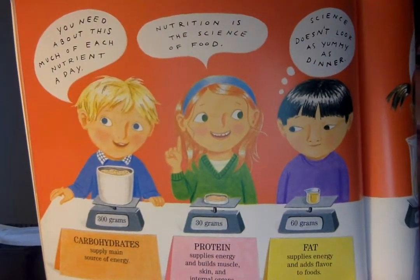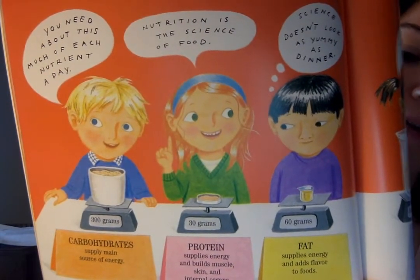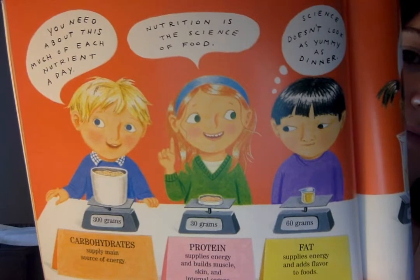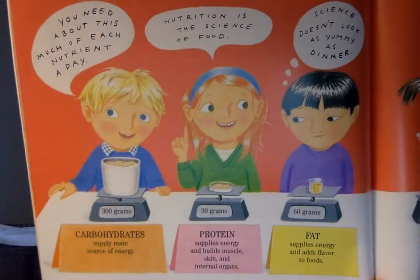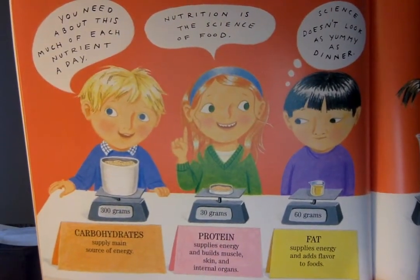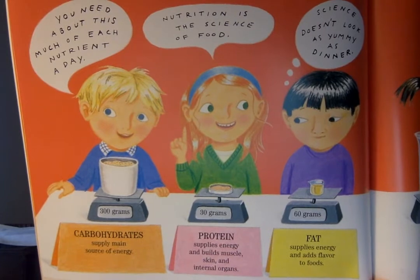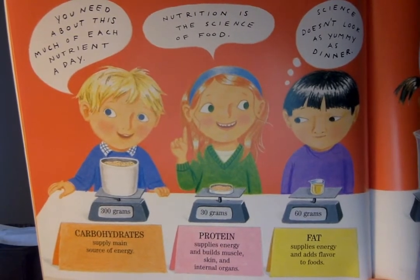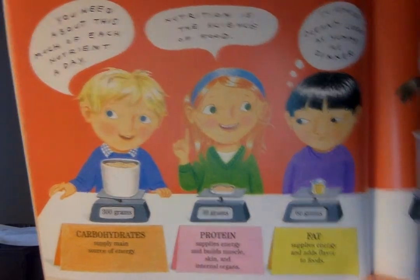The question is: what does the special text on this page teach you about nutrients? A: you need 300 grams of carbohydrates, 30 grams of protein, and 60 grams of fat every day. B: it's more important to eat carbohydrates than fat. C: if you eat more protein than carbohydrates in a day, you are considered a very unhealthy person. D: nutrition is not considered science in some countries. All right, second graders — looking forward to seeing your responses, and see you guys tomorrow.